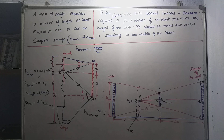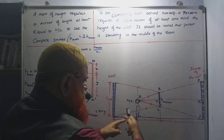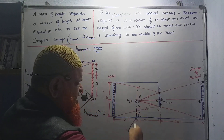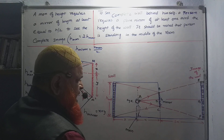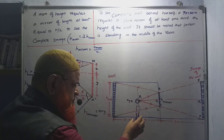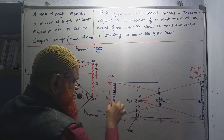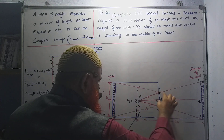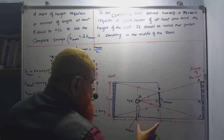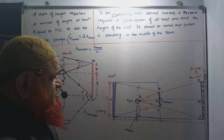The next concept is seeing the complete image of a wall. For example, a person is standing in a complete room exactly at the middle. A mirror is kept on one wall of the room. The length of the room goes from one side to the other, and the man stands at the middle. I am dividing the room so that half of the room is X and the remaining half is also X.